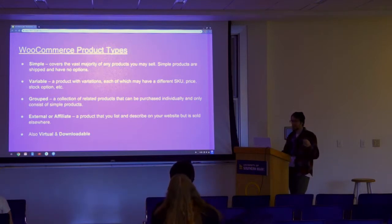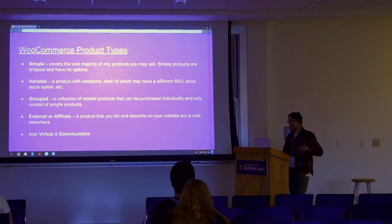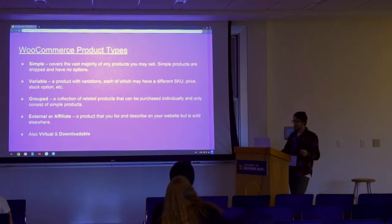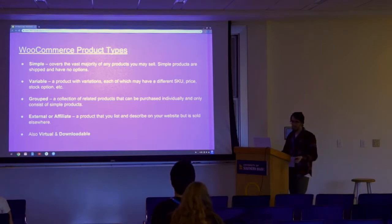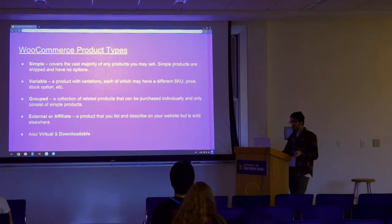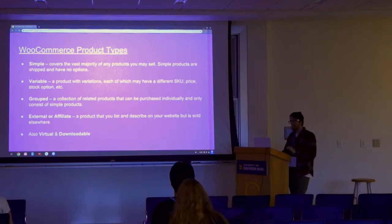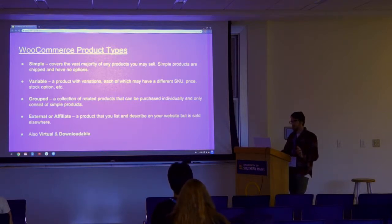Variable products are something more like a shirt. I sell this shirt, it comes in different sizes — small, medium, and large — so we allow the customer options on selecting that product. That product in that scenario has three options. It's similar to having three separate products, but displayed and promoted on a single page.